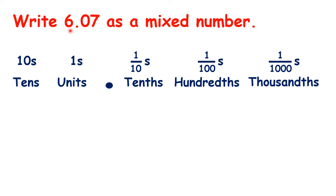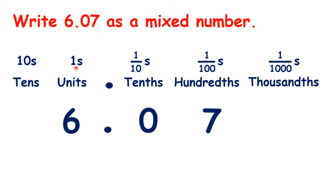How do we write 6.07 as a mixed number? We can see that we have 6 units, or 6 wholes, then we don't have any tenths, and we have 7 hundredths. So, we have 6 and 7 hundredths.